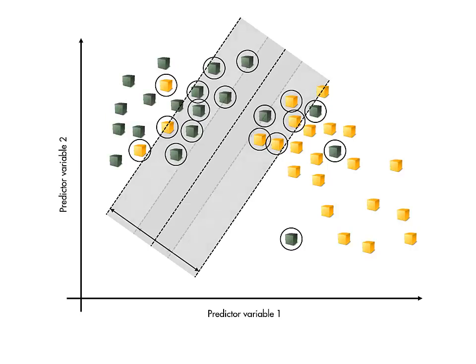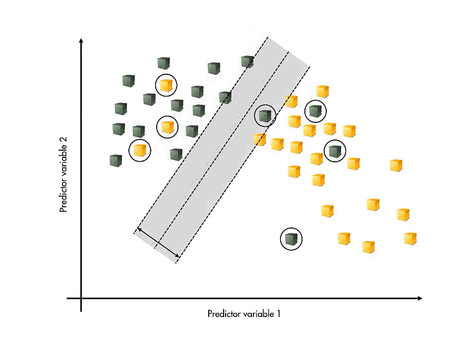The SVM solution, then, is the one that gives the best possible separation between classes. That is, the widest margin without unnecessary misclassifications.